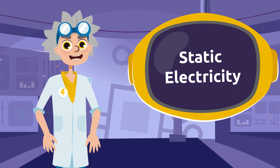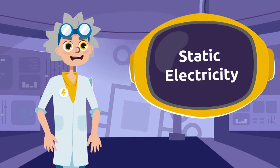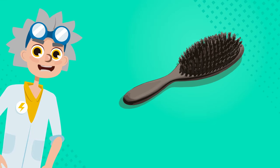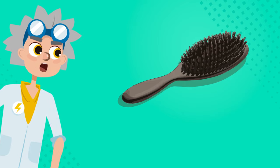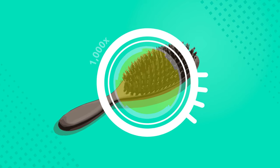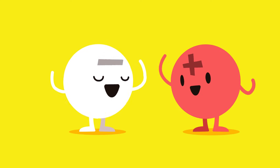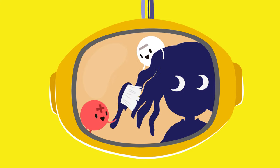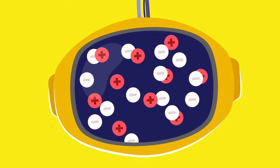Static electricity means that an electric charge is created when objects rub against each other. All objects are made up of atoms that are impossible to see because they are super small. These atoms have different electric charges — positive or negative.